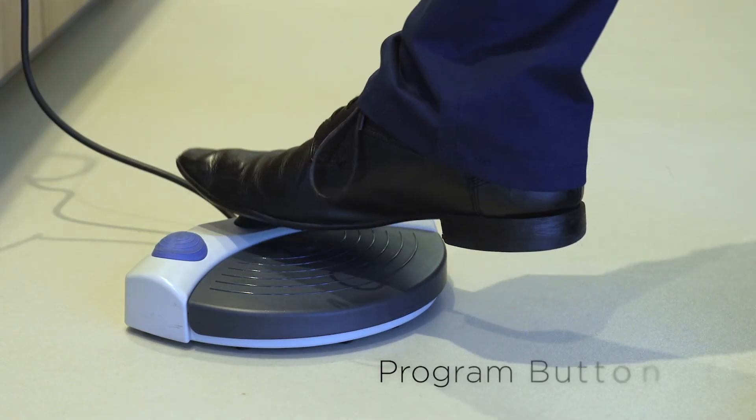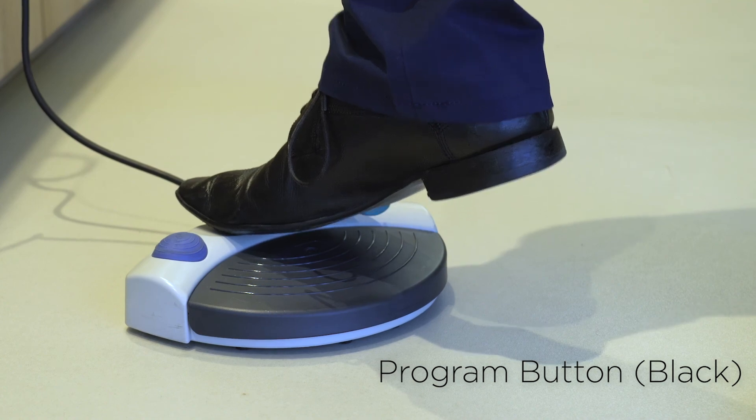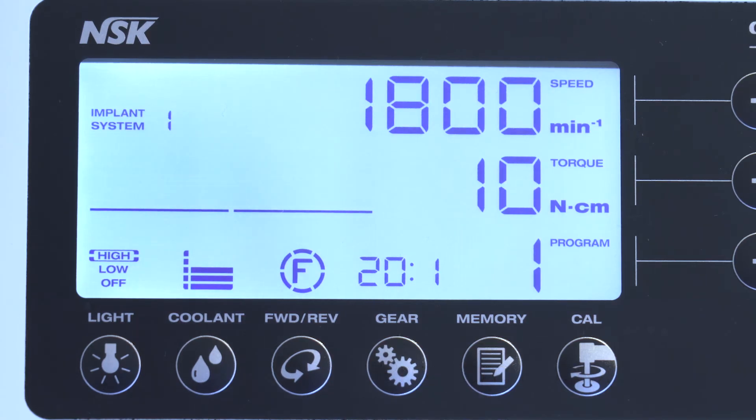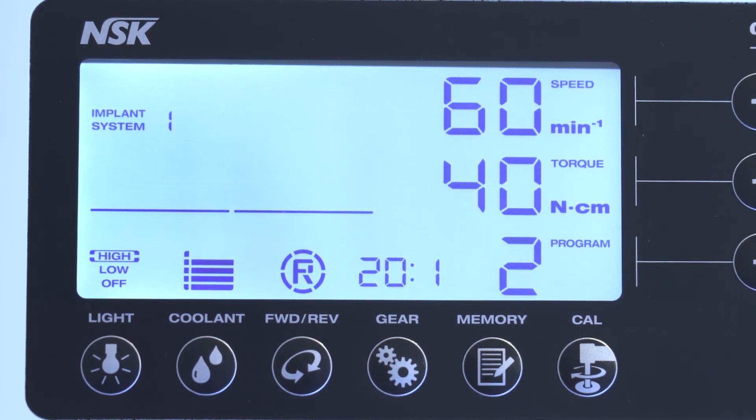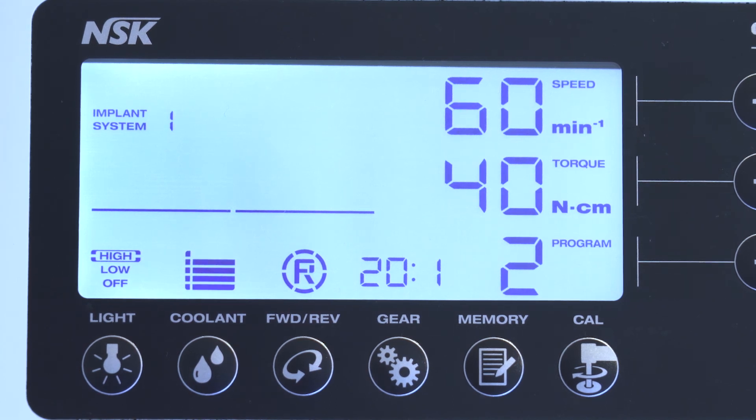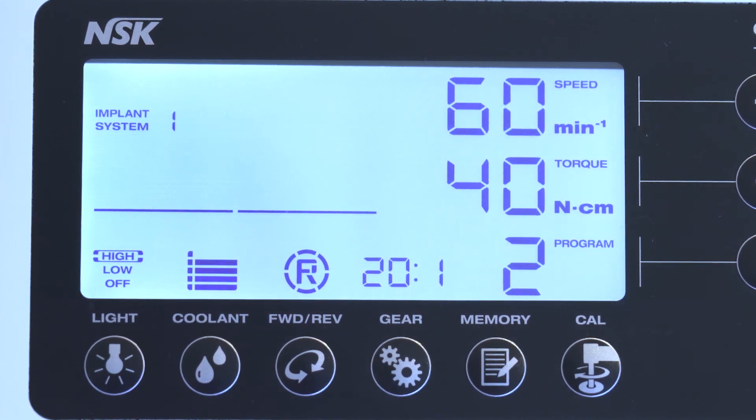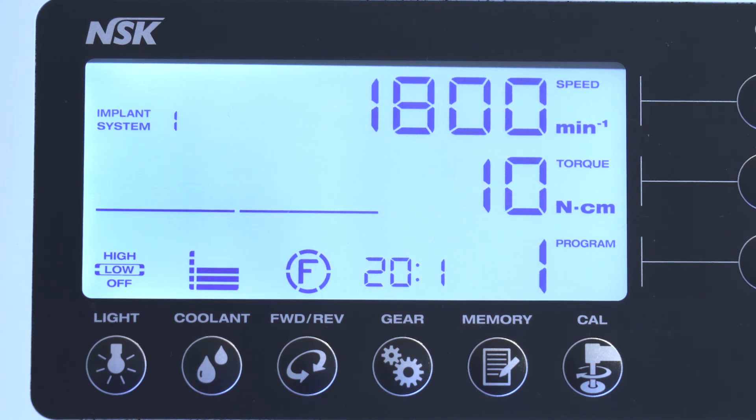Program Button Black. Use to select the desired program number. Program numbers will always ascend each time the button is pressed and released. To descend, press and hold for 1 second and release.